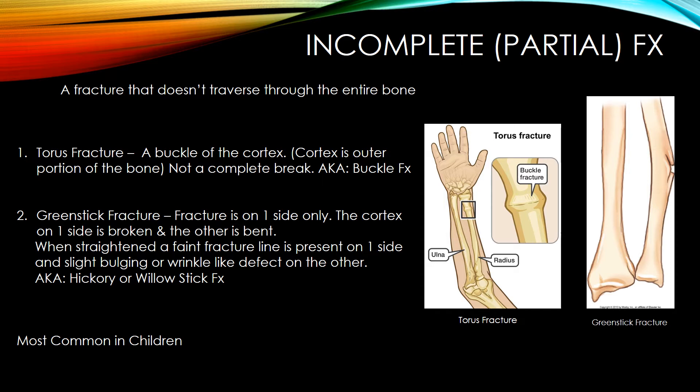A greenstick fracture is on one side only: the cortex on one side is broken and the other is bent. When straightened, a faint fracture line is present on one side and a slight bulging wrinkle-like defect is on the other. Also known as a hickory or willow stick fracture, it is most common in children.